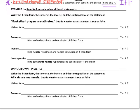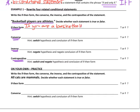For example number one, it asks us to rewrite four related conditional statements, and we're going to practice each type. The statement we have is 'basketball players are athletes,' and we want to put it in the if-then form. So: if you are a basketball player, then you are an athlete.